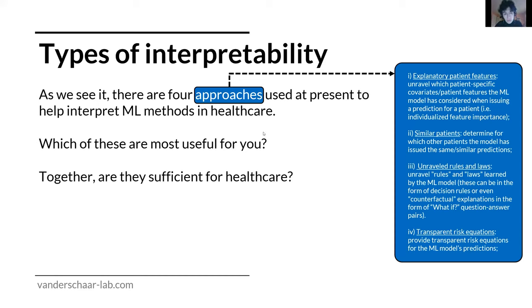The second roundtable question: of the four types of interpretability — feature importance, similarity classification, law or hypothesis discovery, and transparent risk equations — which are most useful to you, and do you need other types? Bing: the four types are a nice way of categorizing different machine learning interpretations. However, in my mind as a clinician, three of them — types 1, 2, and 4 — are all related to the transparency issue: what features the algorithm used to issue a prediction, and what assumptions are being made. If it makes sense in the clinician's mind, these are very important questions.